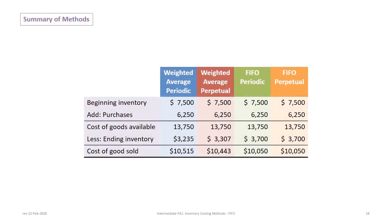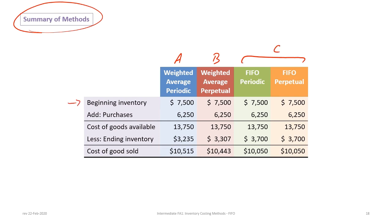Now that we've calculated ending inventory and cost of goods sold under all methods, let's look at a summary. Tutorial A covered weighted average periodic, tutorial B covered weighted average perpetual, and tutorial C covers both FIFO methods. The approach is very similar to begin with — beginning inventory and purchases are added the same way, so the cost of goods available for sale is identical under every method.